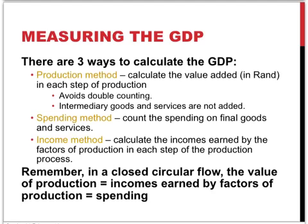Intermediary goods and services are not added to this calculation. With the spending method, we only count the spending on final goods and services, and that gives us the value of GDP. For the income method, we calculate the incomes earned by the different factors of production — in other words, wages, interest, rent, and profits — in each stage of the production process. Keep in mind that in a closed circular flow, the value of production, incomes earned by the factors of production, and spending should always be equal.